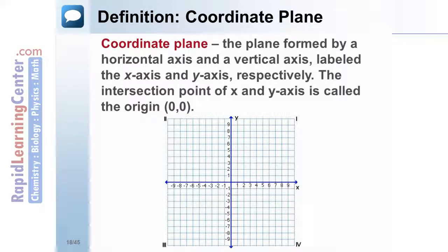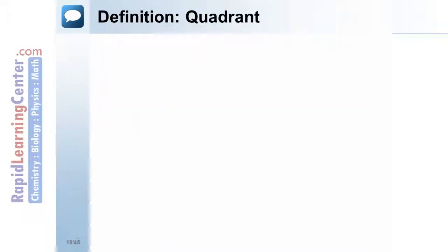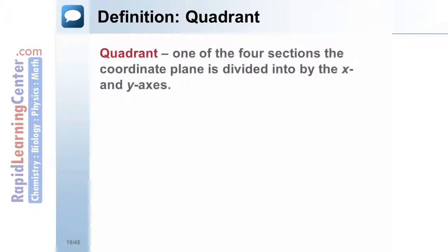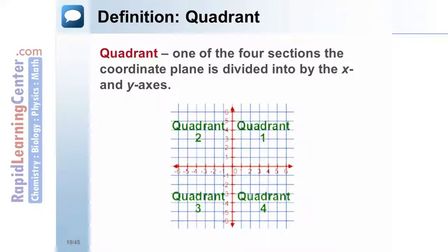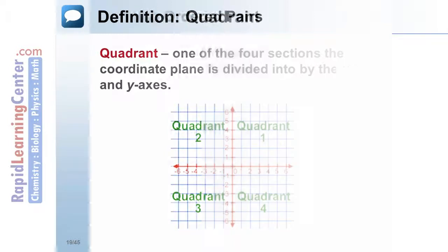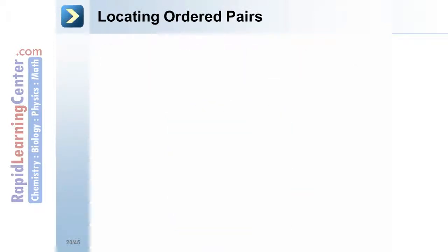Definition — coordinate plane: the coordinate plane is formed by a horizontal axis and a vertical axis, labeled the x-axis and y-axis respectively. Definition — quadrant: a quadrant is one of the four sections the coordinate plane is divided into by the x and y axes. The quadrants are numbered one to four, beginning with the upper right quadrant.